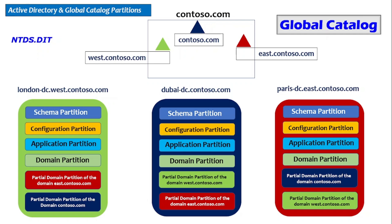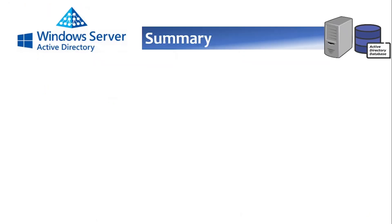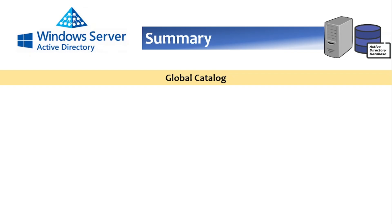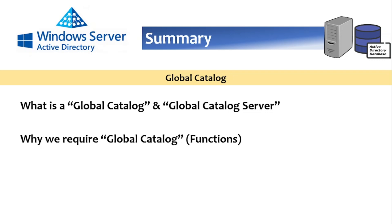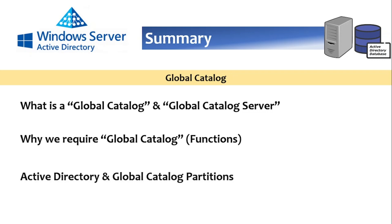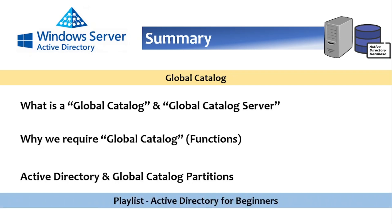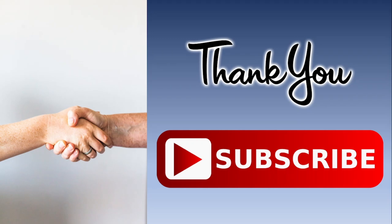Hope you have understood the basic concept behind the Global Catalog. To summarize today's session: we started with what is a Global Catalog and what is a Global Catalog server, we understood why we require Global Catalog, and we covered Active Directory and Global Catalog partitions. If you want to know more about Active Directory, we have an entire playlist — Active Directory for Beginners — and we request you to visit that playlist to watch the videos. Thanks for joining today and have a great day.